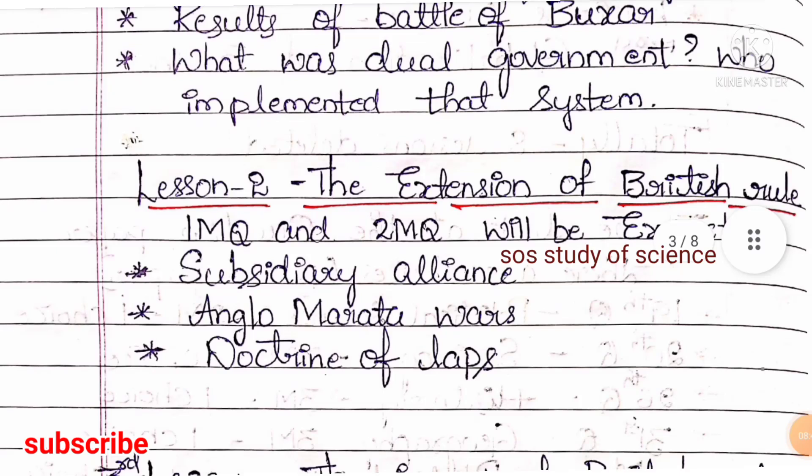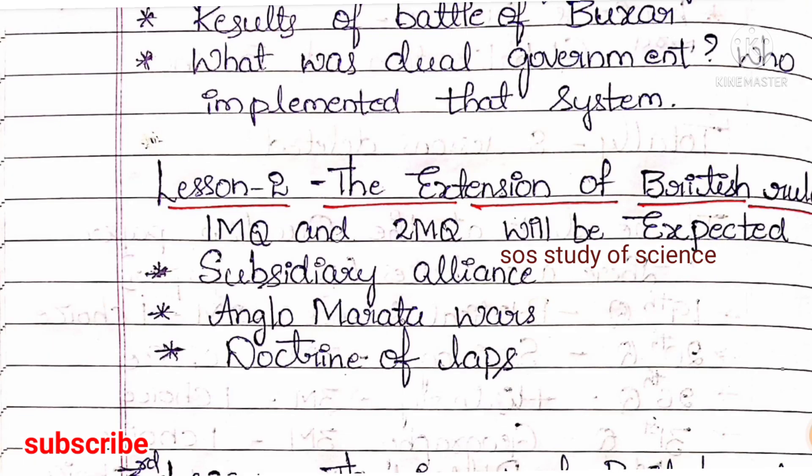Lesson 2 is the Extension of British Rule. Here 1-mark and 2-mark questions are expected. You have to study about the Subsidiary Alliance, the Anglo-Maratha Wars, and the Doctrine of Lapse. These are the important concepts from this lesson.